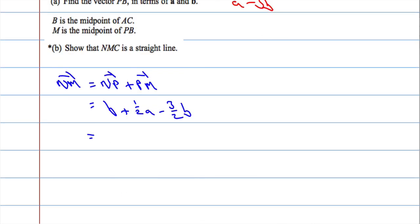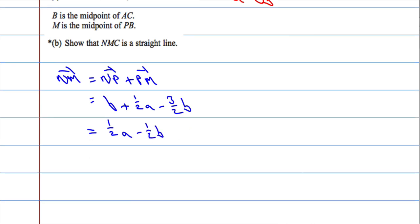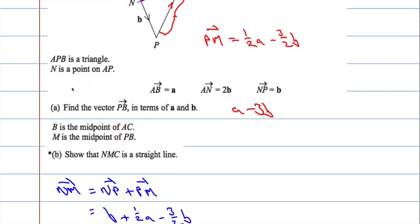And let's just tidy that up. We get a half a, and then b minus 3 over 2b is going to be equal to minus a half b. And I can factor out the half here to make life a little bit easier. So it's going to be a half times a minus b. So that's the vector NM.